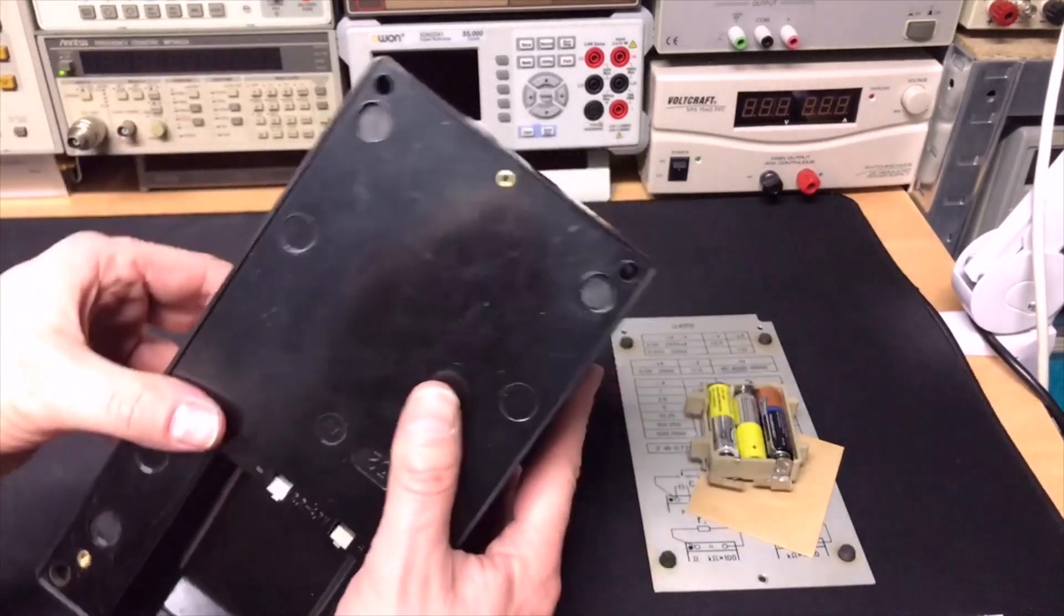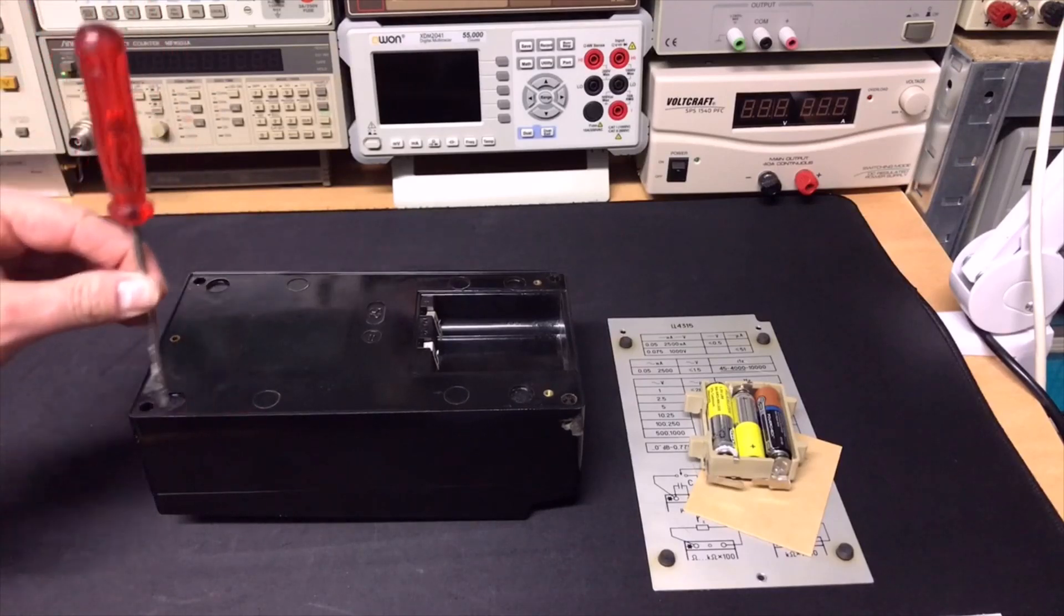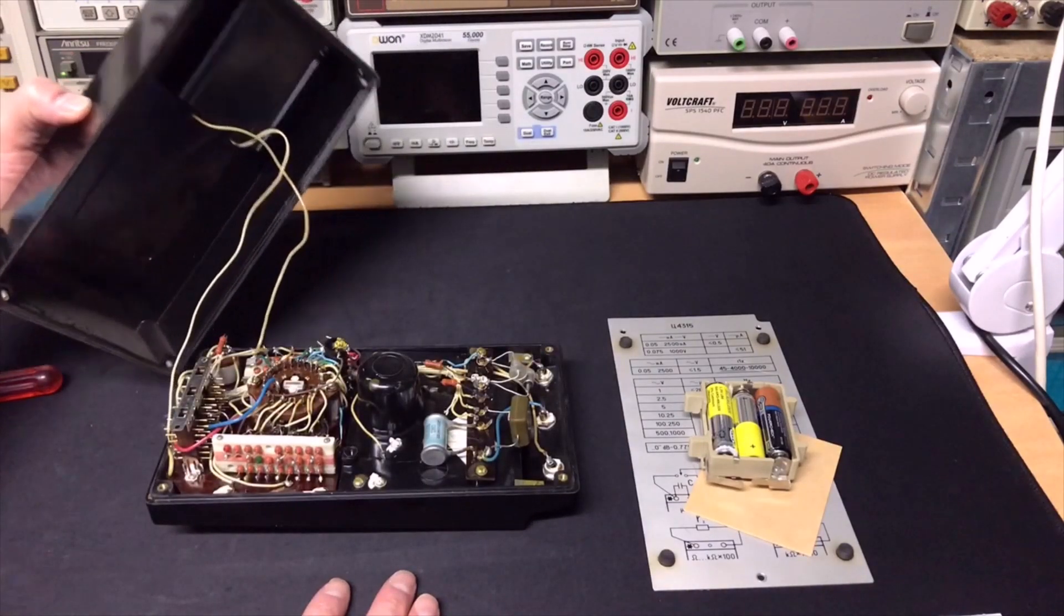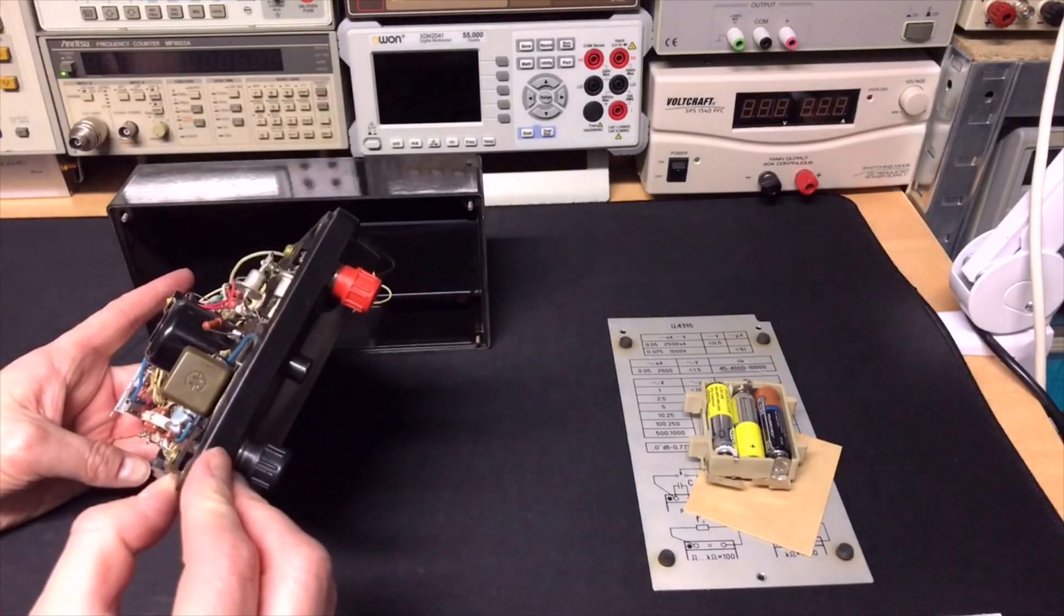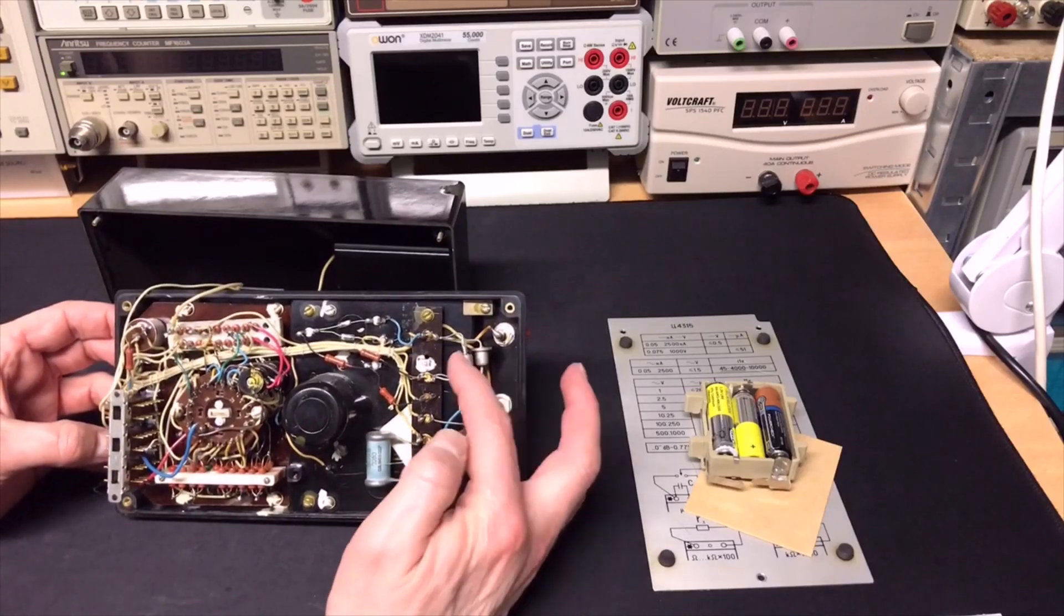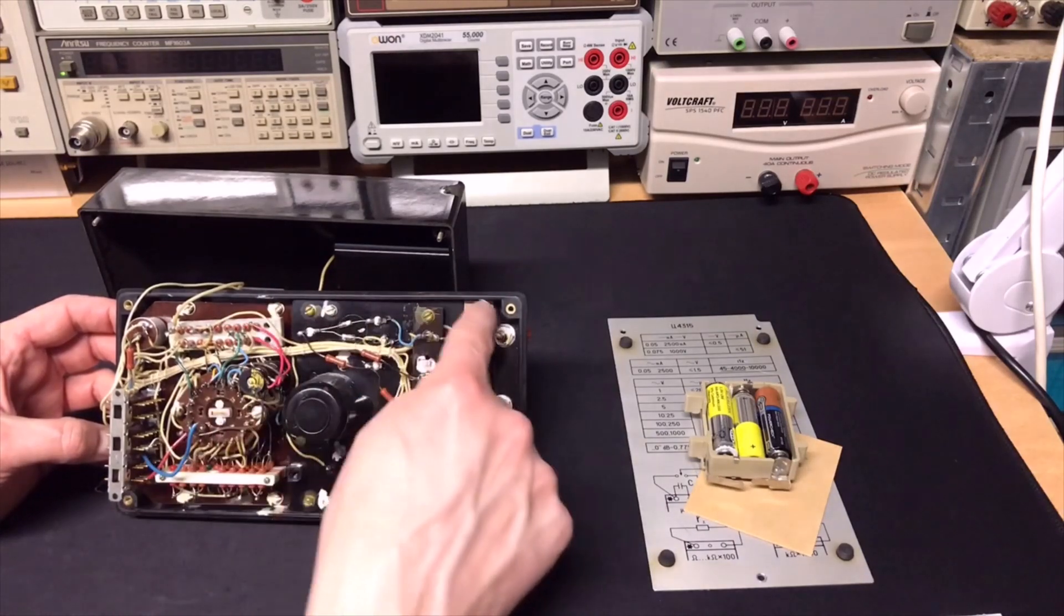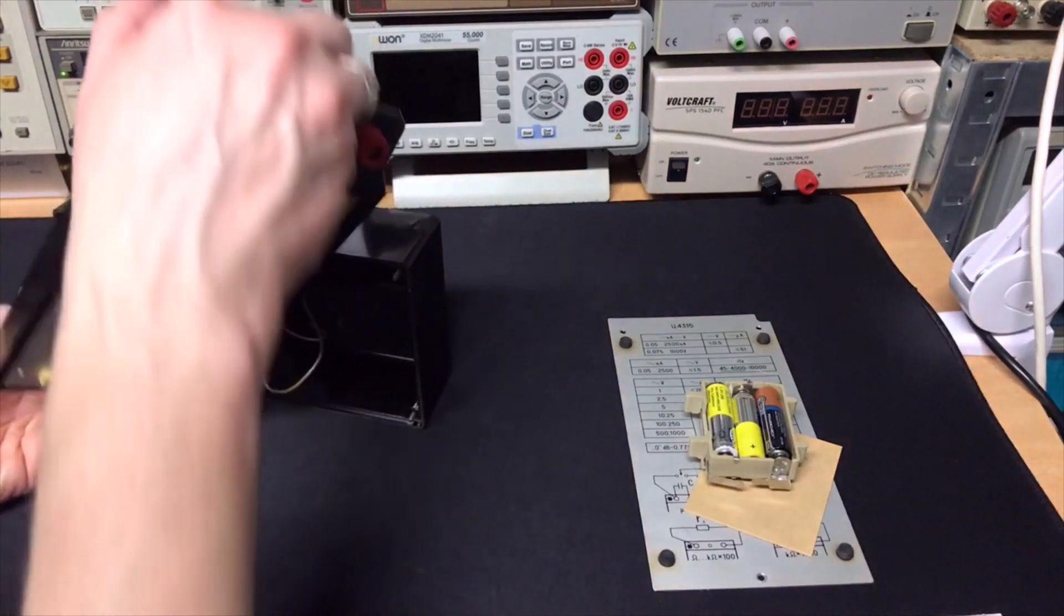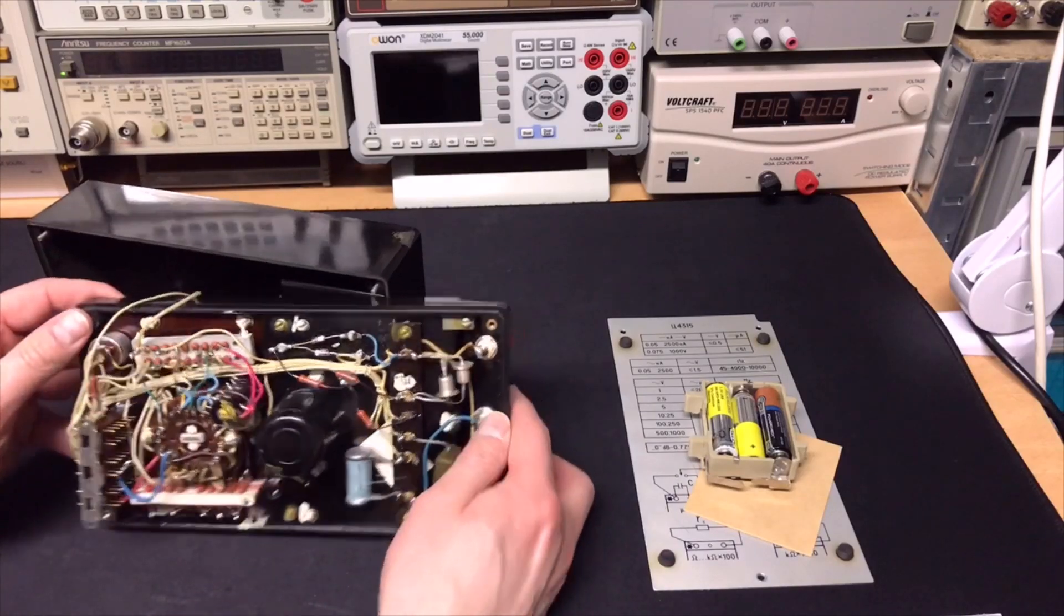Yeah maybe we can carefully open it. Oh it just had four screws in the holes here regular flathead. Big cap, two diodes probably to make from the AC DC. Yeah big meter look at this and then here we have the switch. I don't know what is this these are coils I think maybe it's for the also for the AC.